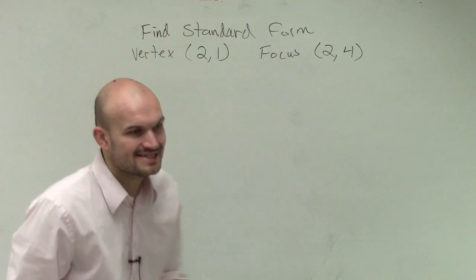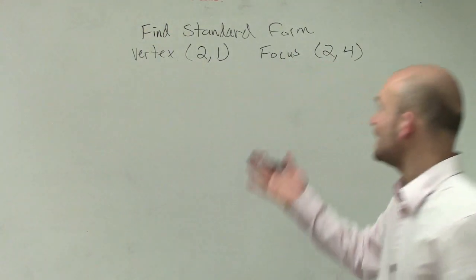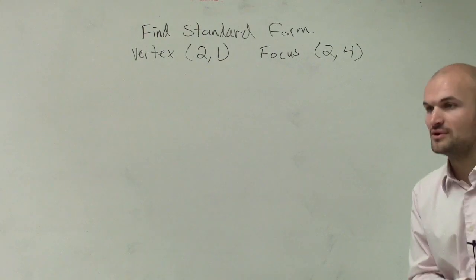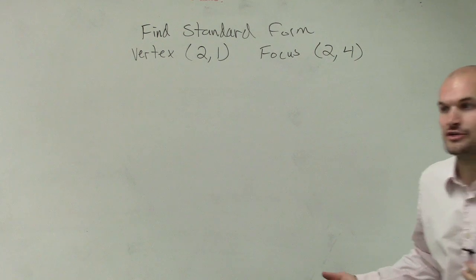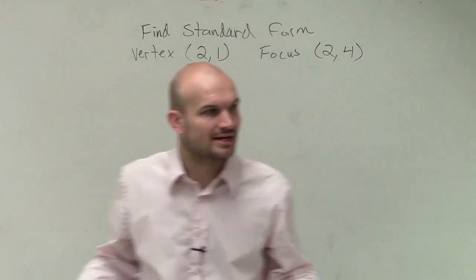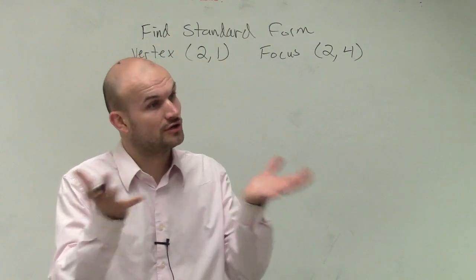So right now, they're saying find the standard form of the equation if we have a vertex at 2 comma 1 and a focus at 2 comma 4. So right now, I need to determine which formula am I going to be using with the focus? Am I going to use the vertical or the horizontal?